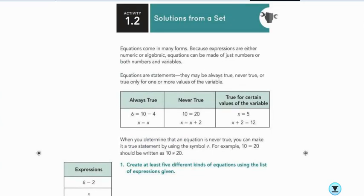Let's look at 2.1. It says find solutions from a set. It says equations can come in many forms, because expressions are either numeric or algebraic. Equations can be made of just numbers or numbers and variables. And so one way we can think about them is they can be always true, never true, or sometimes true.